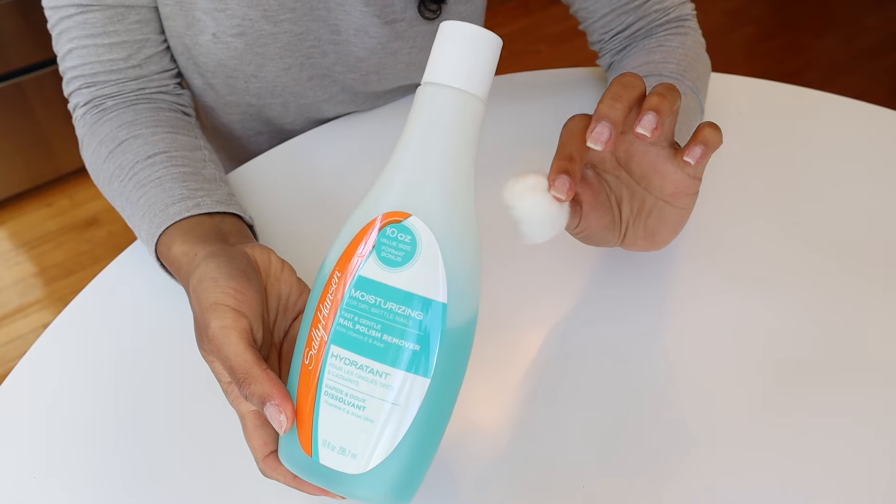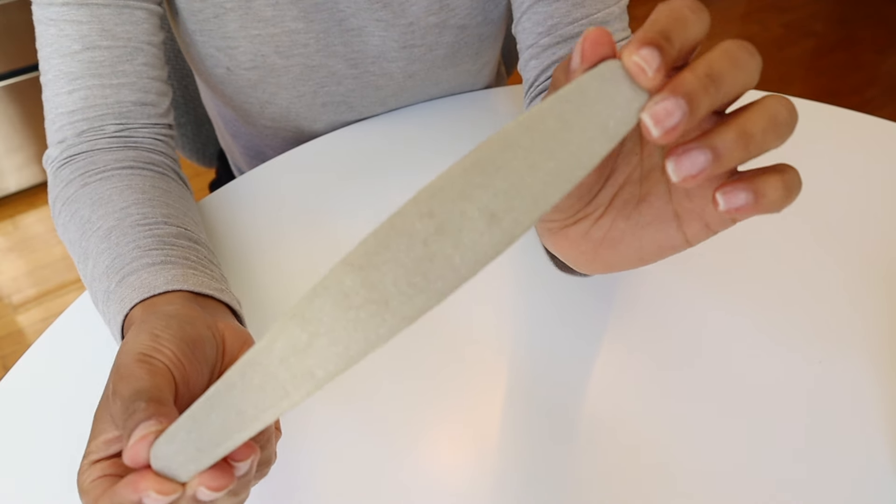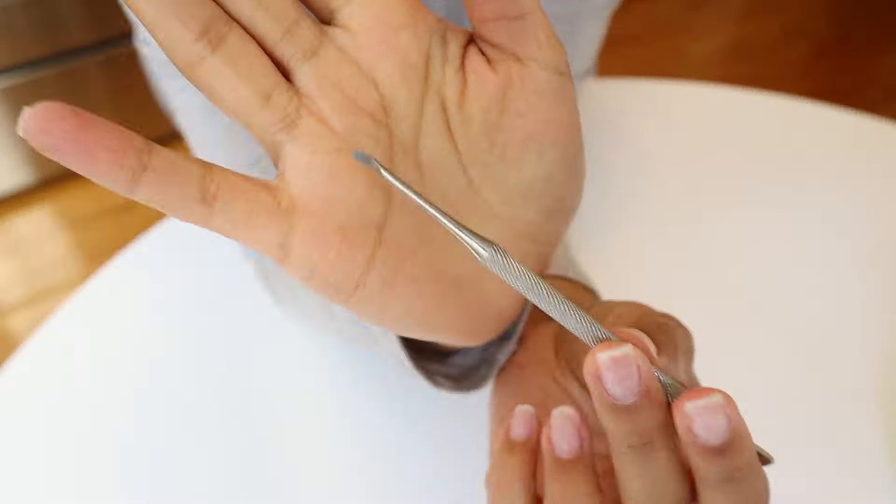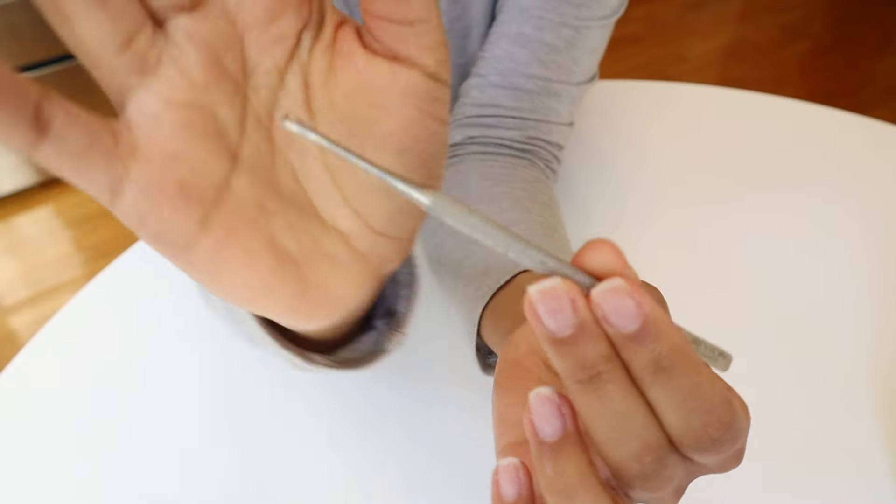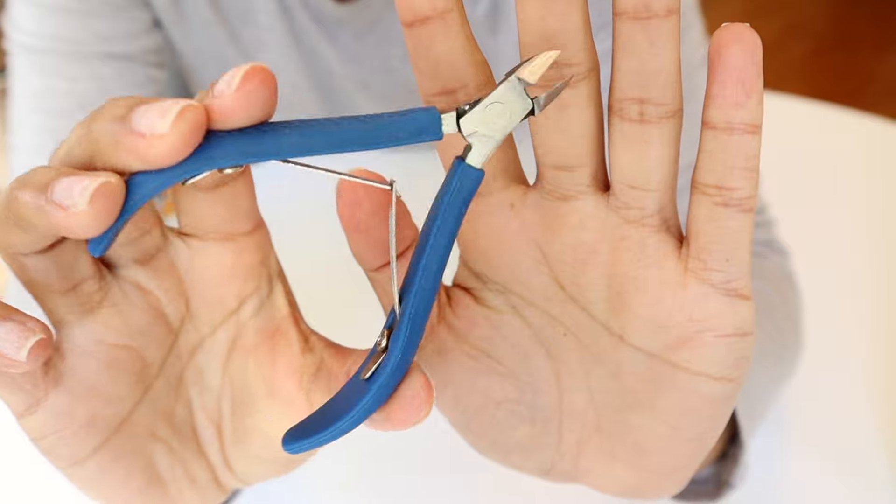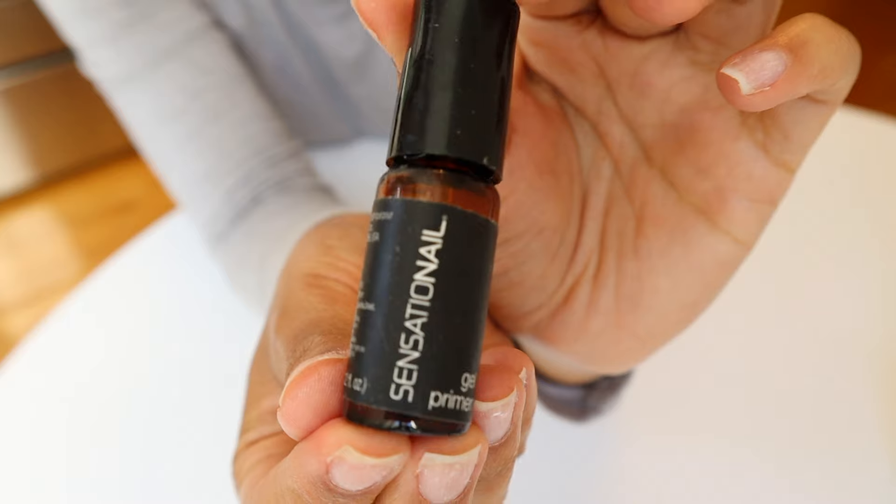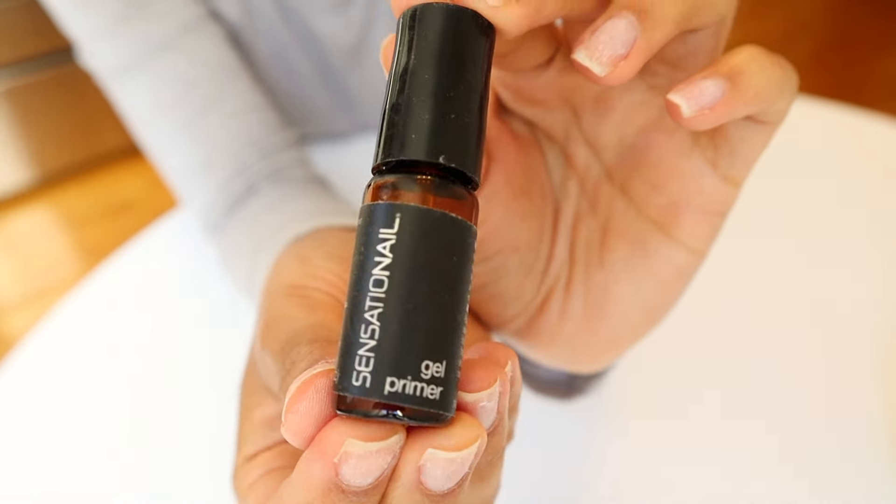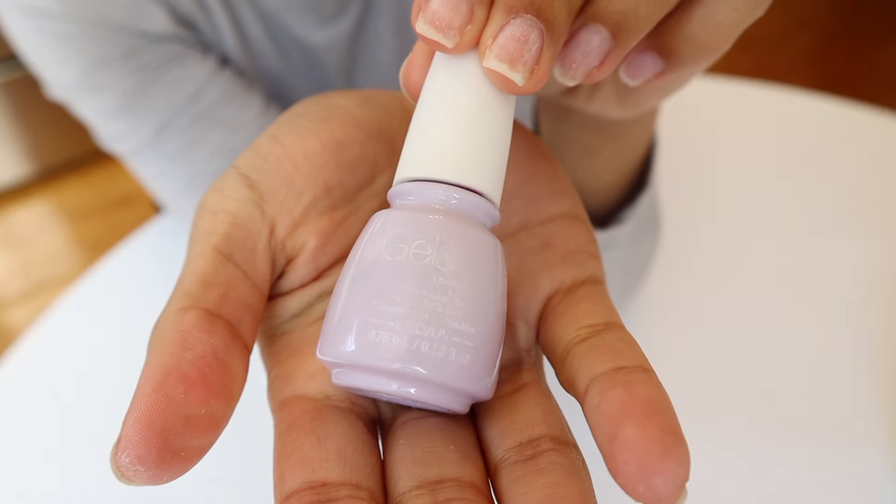You're also going to need a nail file, a cuticle pusher like this one, cuticle trimmers or nippers. This is totally optional. Gel primer, the nail polish of your choice of course, and a gel top coat.